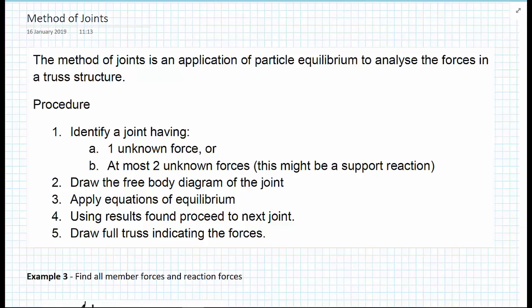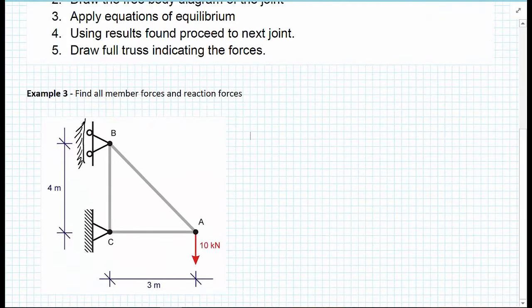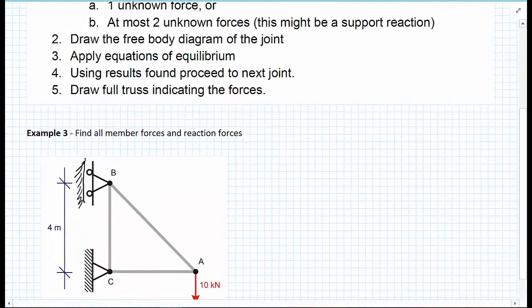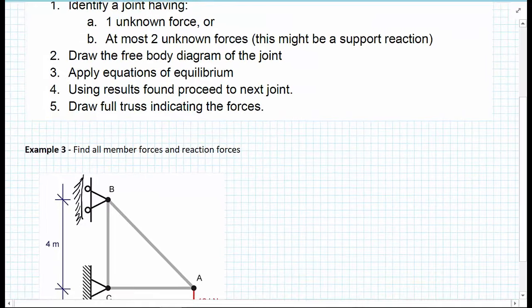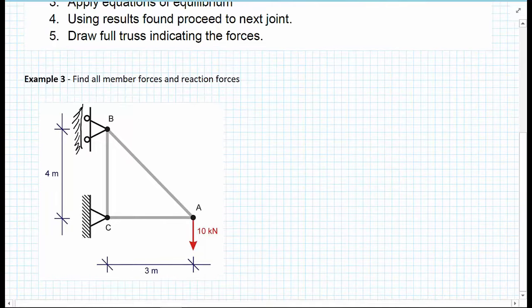We have a procedure that we use to do this. For a given truss, we look around the truss and we look to see if there is a joint that has one unknown force, or at most two unknown forces. One of the unknown forces might be a support reaction.